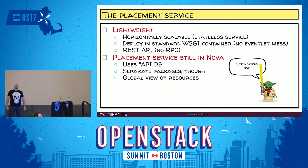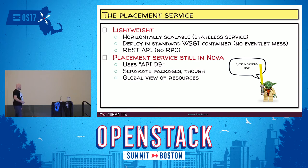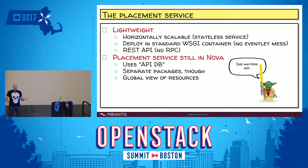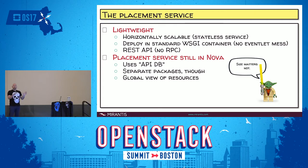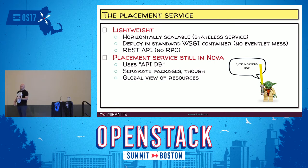Importantly, it has a global view of resources. In the new cells v2 system, you've got cells that comprise a subset of compute resources within Nova. Each of those cells has a Nova database with information about resources within that cell. The placement API has a view of the entire deployment, and it's also not specific to just Nova.